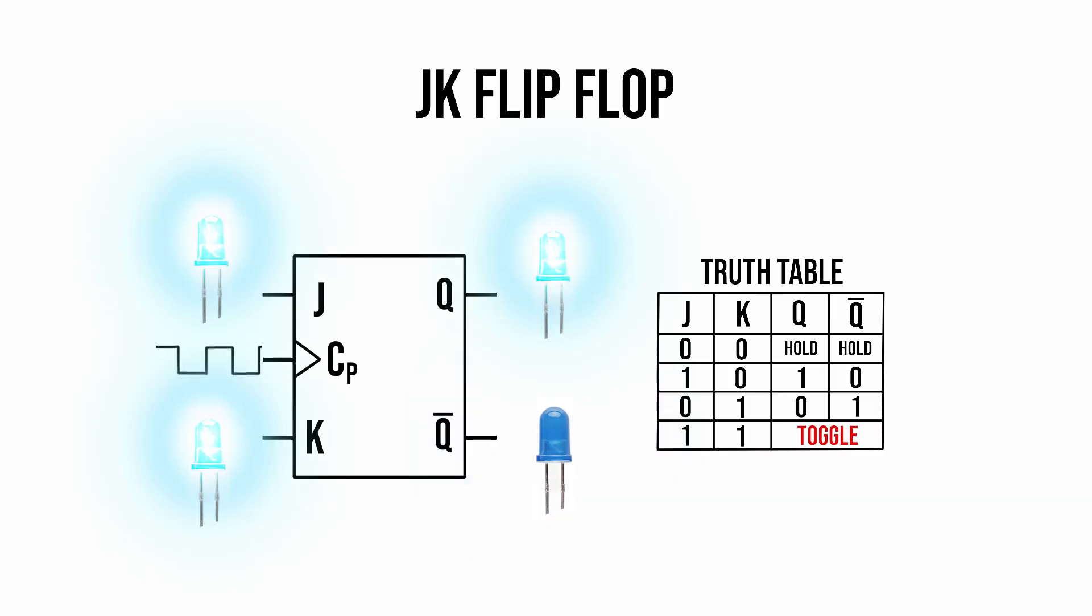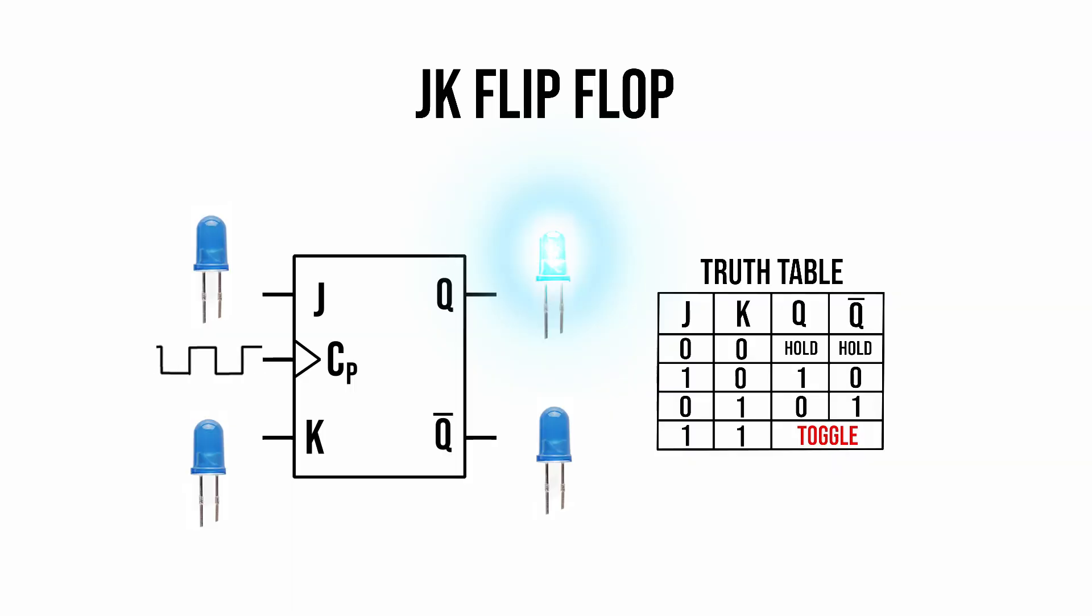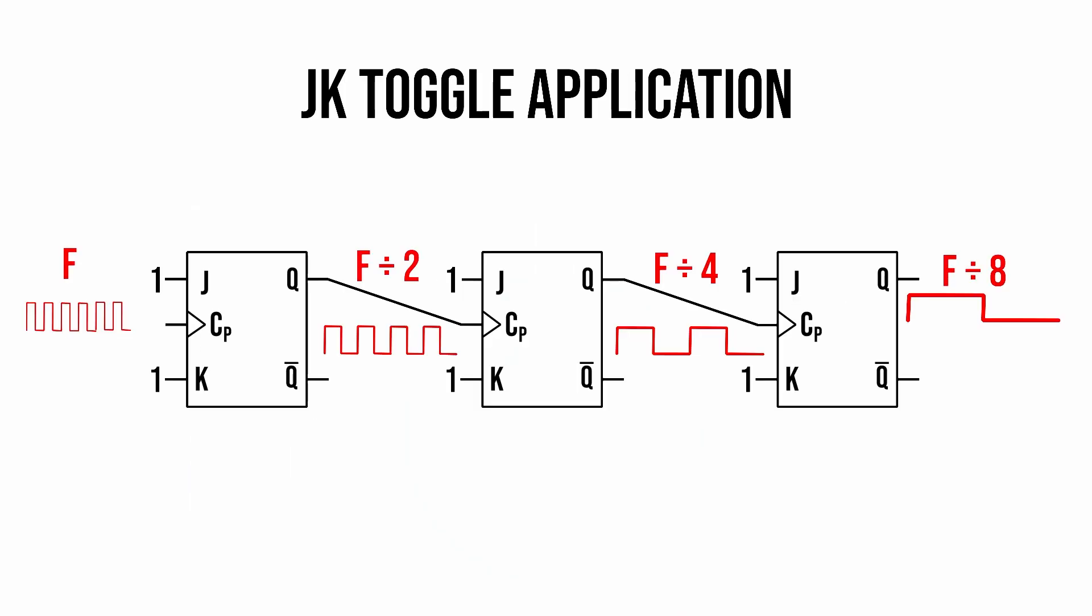Well, with the JK flip-flop, when both are high, the output toggles from the previous state. Why would you want to do that? The use of this special toggle state doesn't seem obvious at first, but makes them useful in things like frequency dividers. As in, if we daisy chain them in series, the output of each is divided in half, which can make things like ripple counters. In fact, let's make one now so you can see what I'm talking about.